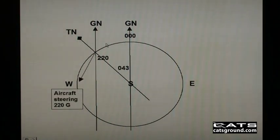Draw in the aircraft heading, which is steering 220 degrees grid, measured from the Grid North, zero, zero, zero reference here. The 043 angle is also in this area here.